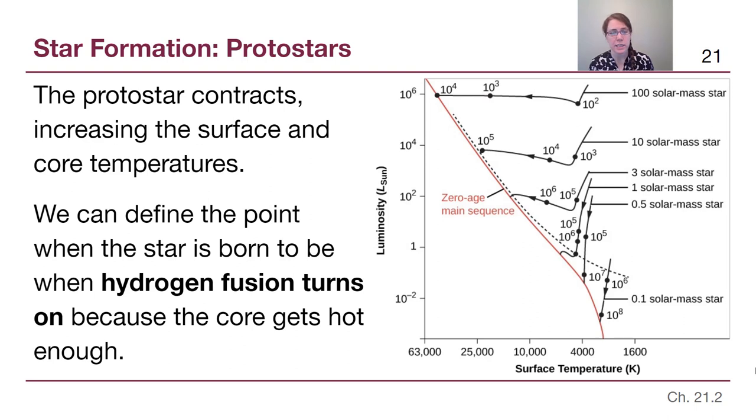Now, as the protostar continues to contract, so we had this cloud of gas and dust, this dense core is what it's called, it collapses down and forms a protostar, which continues to collapse and heat up. We can define the point where the star actually becomes a star, this whole butterfly from caterpillar idea. We can define the star's birth as when hydrogen fusion turns on in its core.